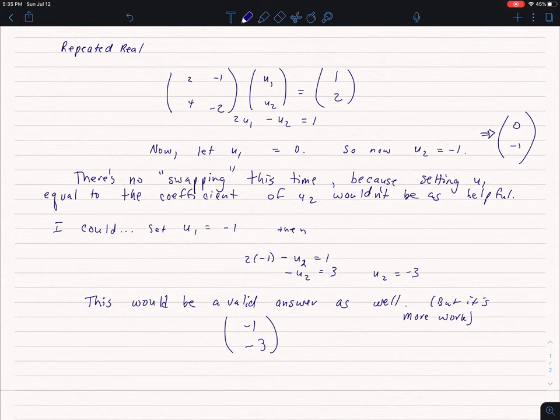So if I have an equation like this, 2u1 minus u2 equals 1, what I said in the video is, let's just let u1 equal 1. And if that happens, well then what's u2? And then I come up with 0 negative 1.